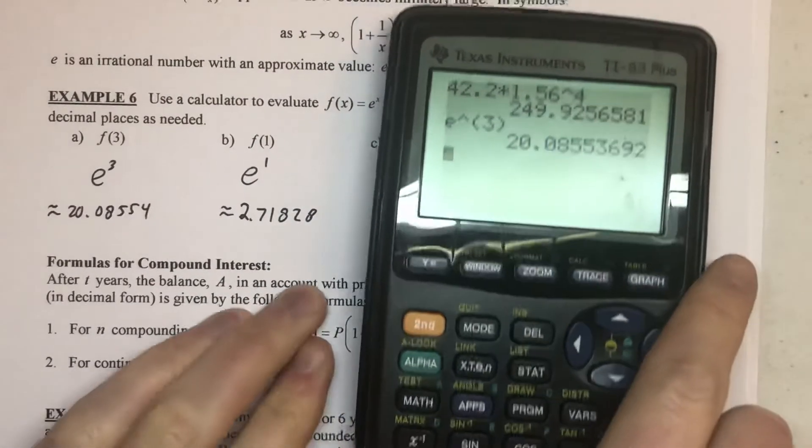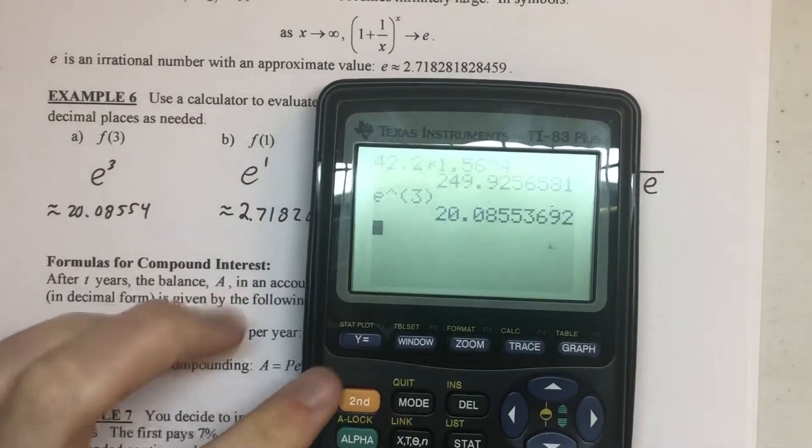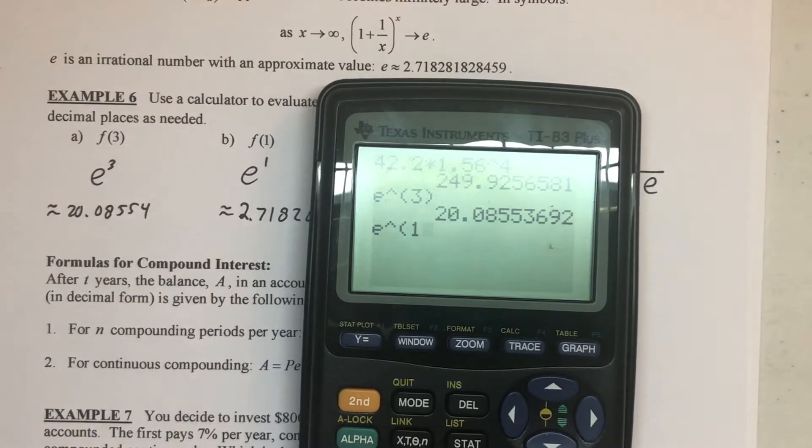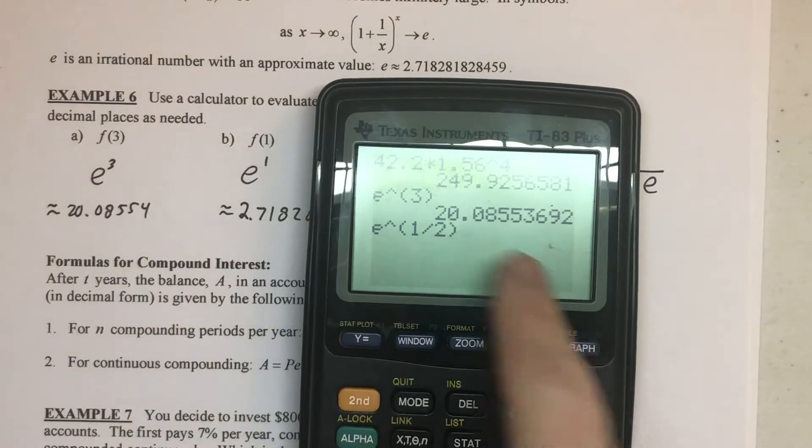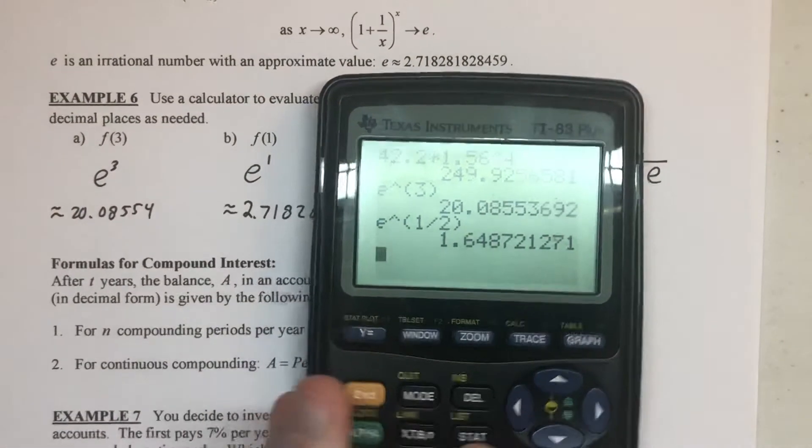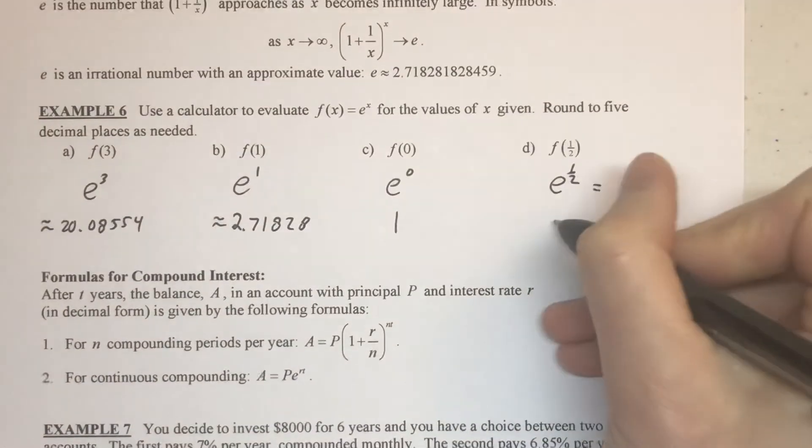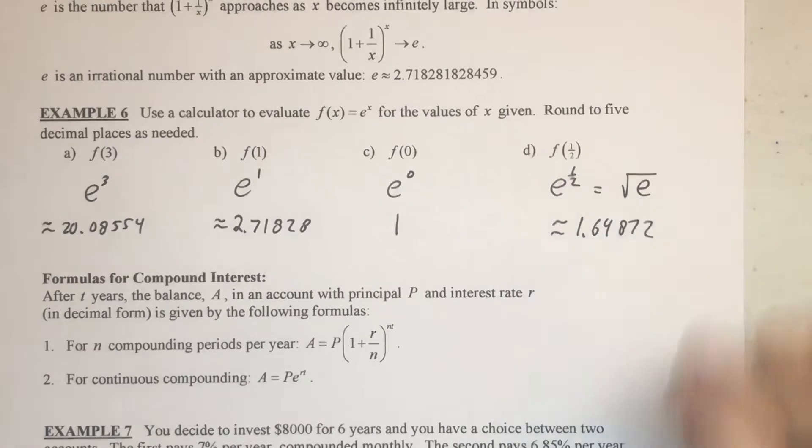I do want to point out that with your calculator, when we type this in, you can see I'm typing, I will do the e to the, and then I'm going to go ahead and make sure I get the whole one-half in parentheses, so it knows that that whole fraction is the power of e, and then that gives me my decimal. So, we'll approximate that to five places, 1.64872.